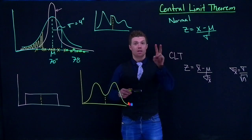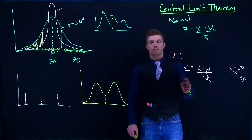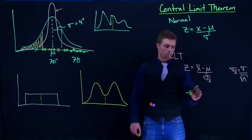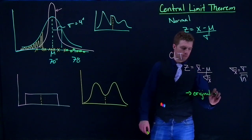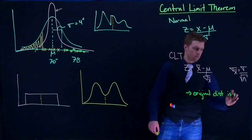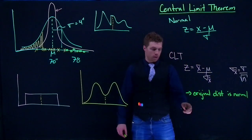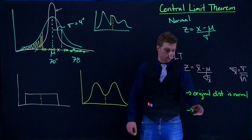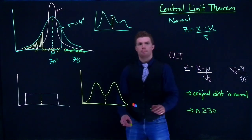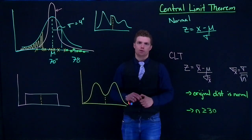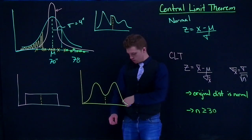Central limit theorem, we can invoke it in two ways. Invocation number one, the original distribution is normal. The other way that we could have is that our sample size n is greater than or equal to 30. If we can hit this threshold of where our sample is this large, it doesn't matter what the distribution looks like. The basic shape of the sampling distribution is going to be basically normal or approximately normal for all of these scenarios.